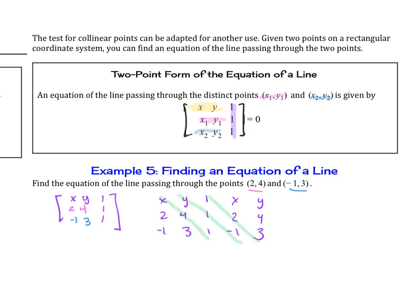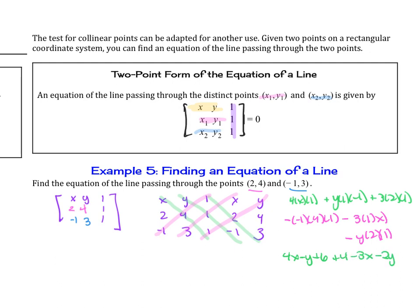So this will be 4 times x times 1 plus y times 1 times negative 1 plus 3 times 2 times 1, and then we subtract the products going up. So this will be minus, minus 1 times 4 times 1, minus 3 times 1 times x, minus y times 2 times 1. And then, so let's simplify. This is 4x minus y plus 6 plus 4 minus 3x minus 2y.